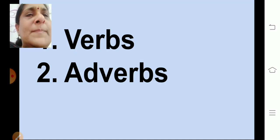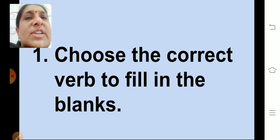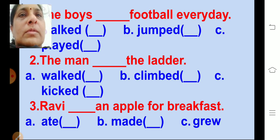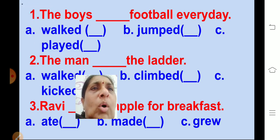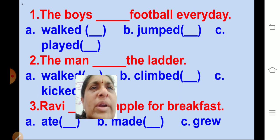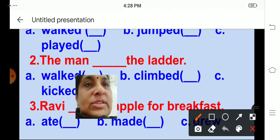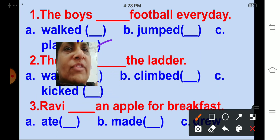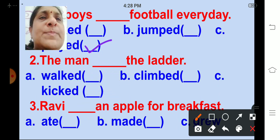Now let's begin. The first activity is: choose the correct verb to fill in the blanks. The boys ___ football every day. Options are walked, jumped, played. The correct answer is: the boys played football every day.